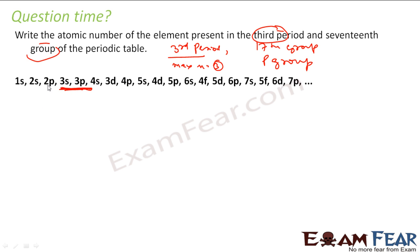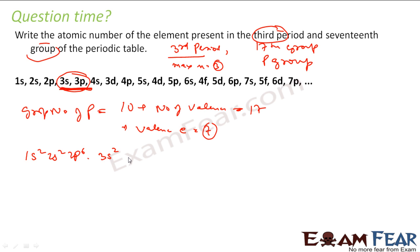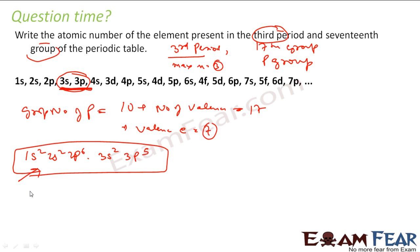It is in the 3rd period, so it is one of those elements. Now, the group is 17. For the p group, group number equals 10 plus the number of valence electrons, and this is given as 17. So the number of valence electrons is 17 minus 10, which equals 7. The electronic configuration is 1s2, 2s2, 2p6 — those 10 electrons are already there — and then I place 7 valence electrons: 3s2 and 3p5. The atomic number is 10 plus 7, which equals 17.